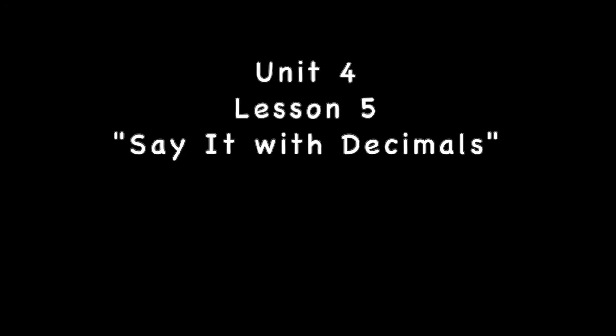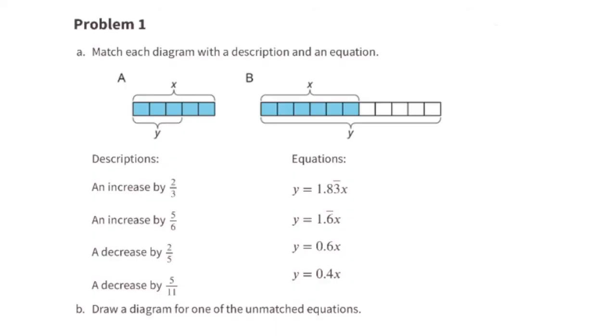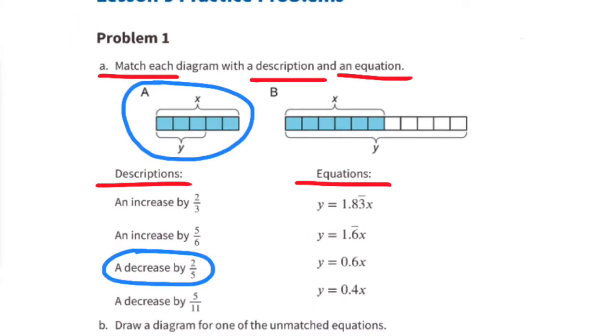Seventh grade, Open Up Resources Illustrative Mathematics, Unit 4, Lesson 5: Say It with Decimals. Problem number one: Match each diagram with a description and an equation. Diagram A shows a decrease by two-fifths, and that's because x started out as five-fifths and the segment y is only three-fifths—that's a decrease of two-fifths.